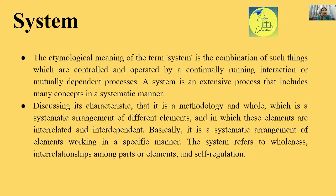Toh tantra ka kya matlab hai — ki bahut saare aise ang hain jo milkar ek hi kaam karte hain. Unme structure hai, specificity hai, wholeness hai — yahi saari khasiyat system ki hoti hai. The etymological meaning of the term 'system' is the combination of such things which are controlled and operated by a continually running interaction or mutually dependent processes.